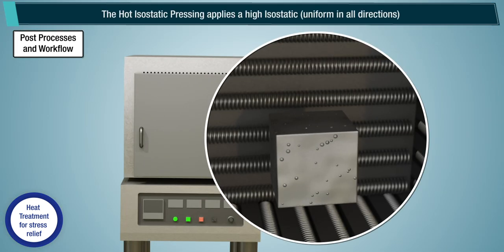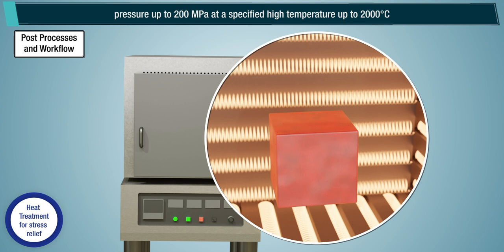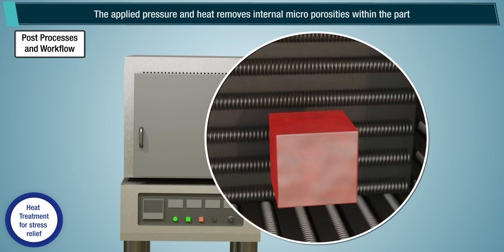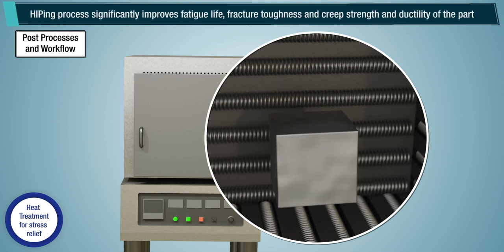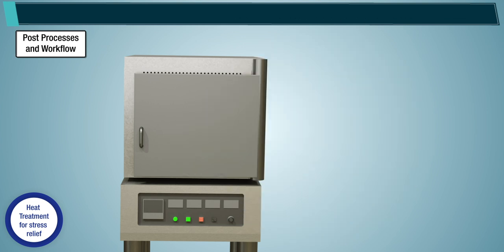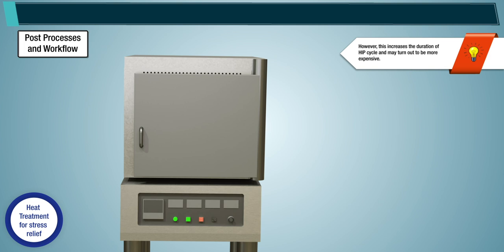HIP (Hot Isostatic Pressing) applies a high isostatic, uniform-in-all-directions pressure up to 200 MPa at a specified high temperature up to 2000 degrees Celsius for a specified duration, followed by controlled cooling to ambient. The applied pressure and heat removes internal microporosities within the part. The HIP process significantly improves fatigue life, fracture toughness, creep strength, and ductility. Note: HIP is an expensive process. Recent advancements in HIP technology enable HIP along with other heat treatments such as stress relief, annealing, and solution heat treatment as a single operation; however, this increases the duration of the HIP cycle and may turn out to be more expensive.